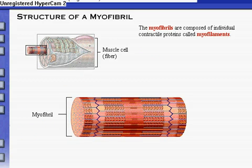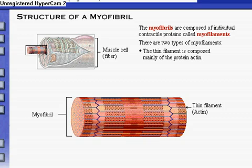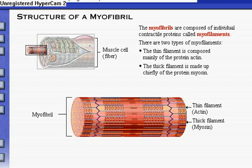The myofibrils that are packed into a muscle cell are composed of individual contractile proteins called myofilaments. There are two types of myofilaments: the thin filament, composed mainly of the protein actin, and the thick filament, made up chiefly of the protein myosin. Details of thick and thin filament structure are covered in another topic: the sliding filament theory.